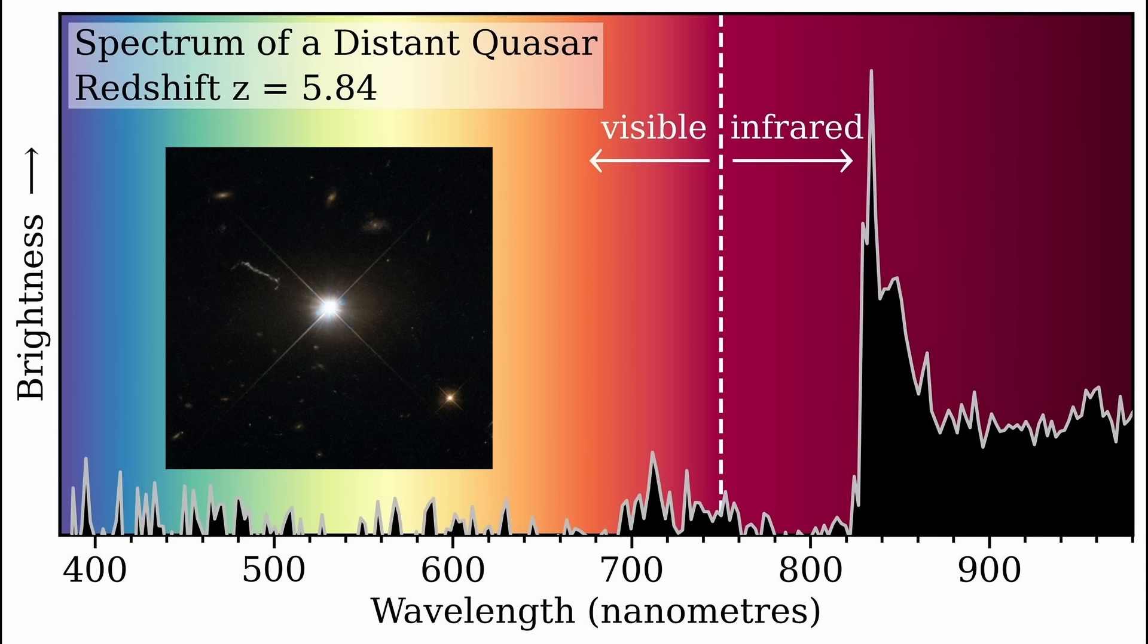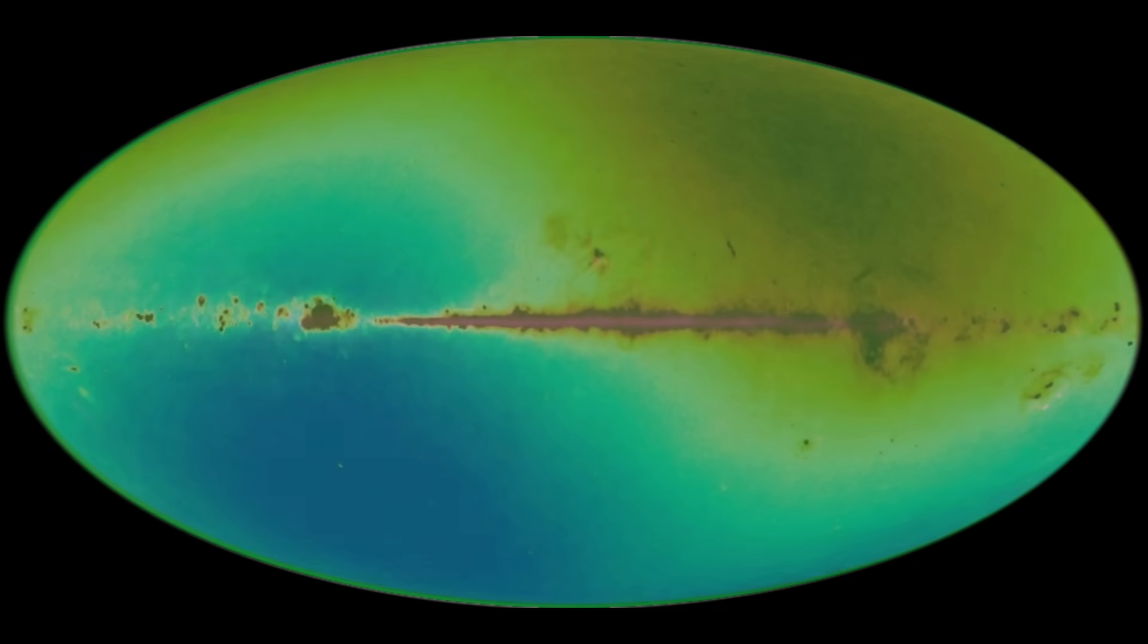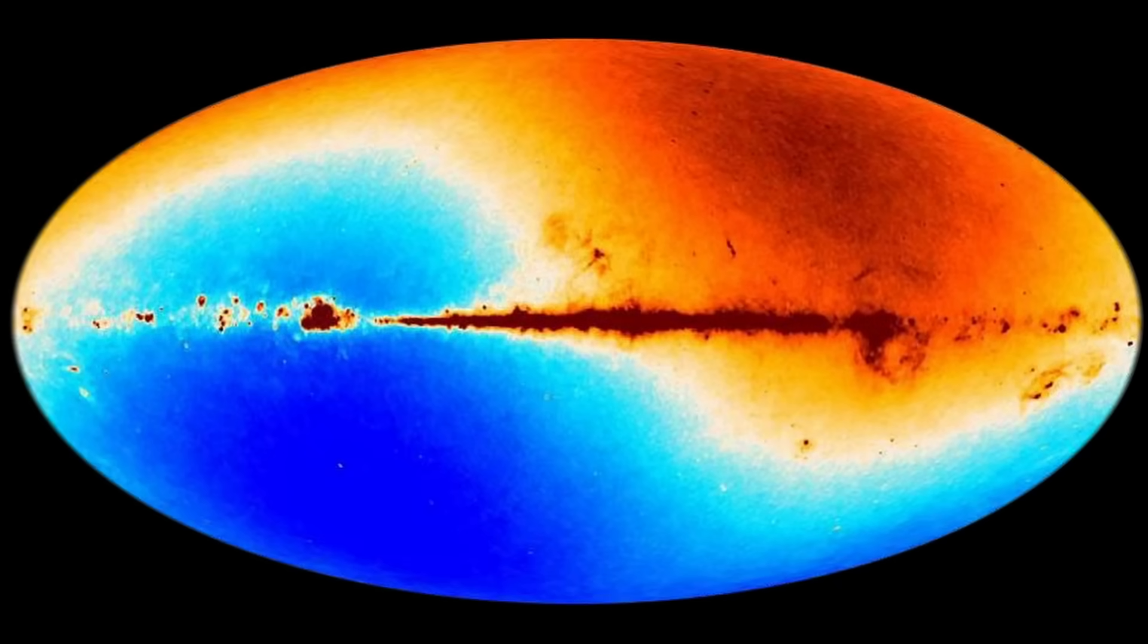Quasars are real, resolvable sources. Their spectra are measured directly from Earth and already contain the imprint of our motion through the universe. The CMB, by contrast, is a diffuse radiation field whose dipole is only interpreted as motion through it.